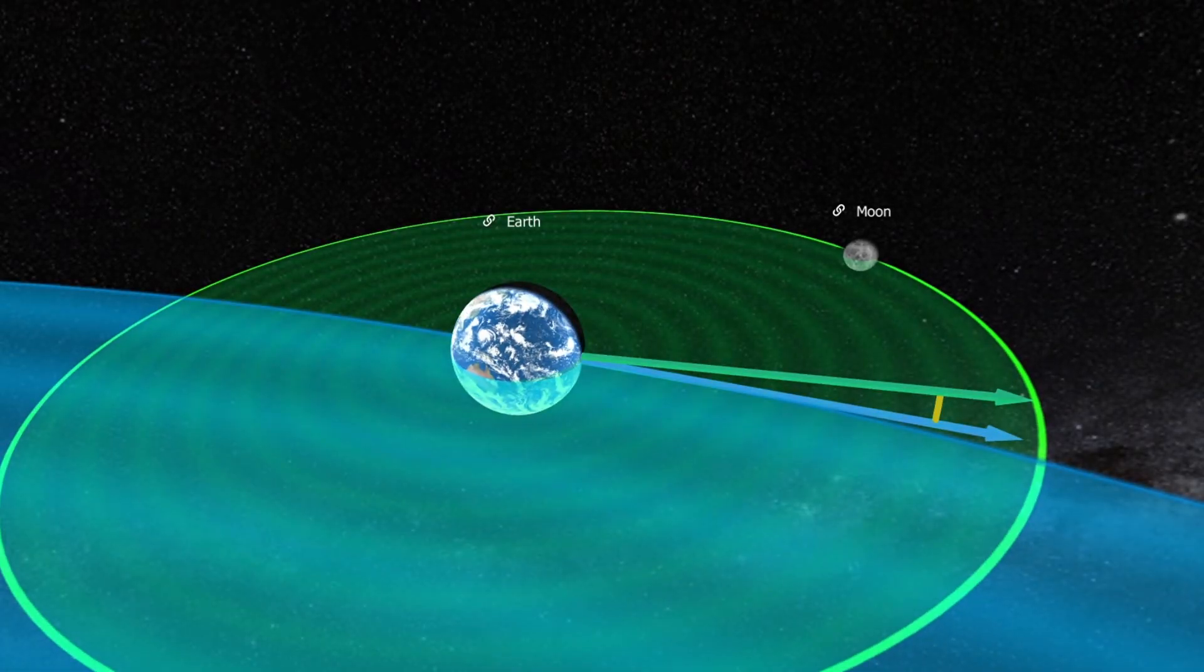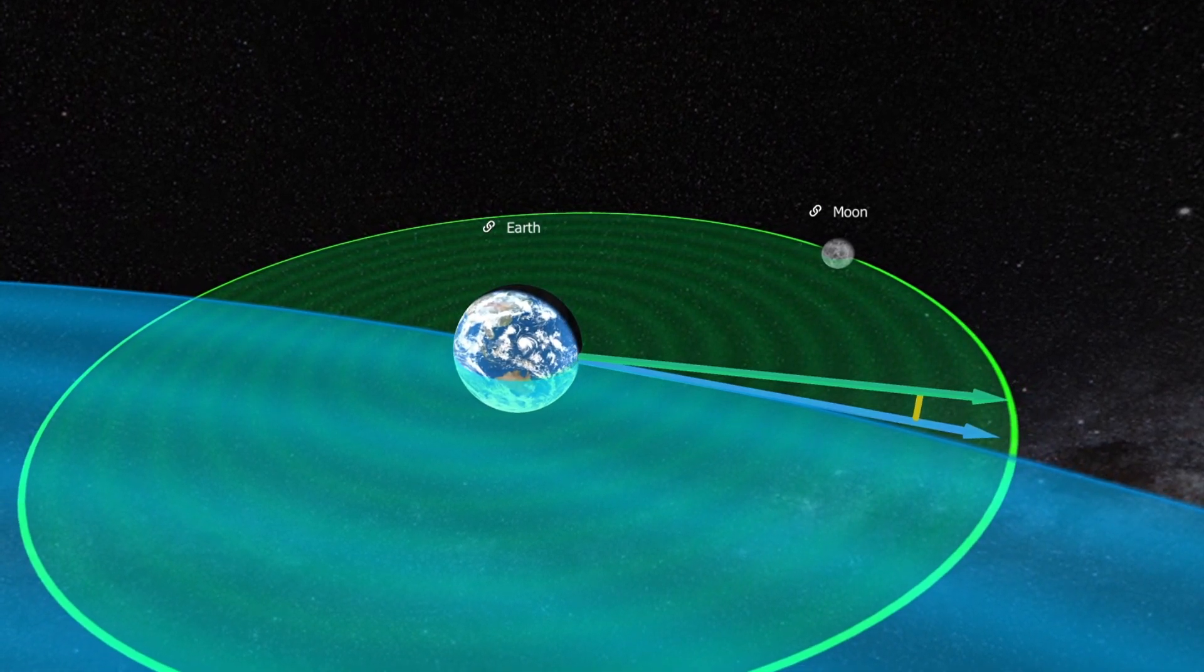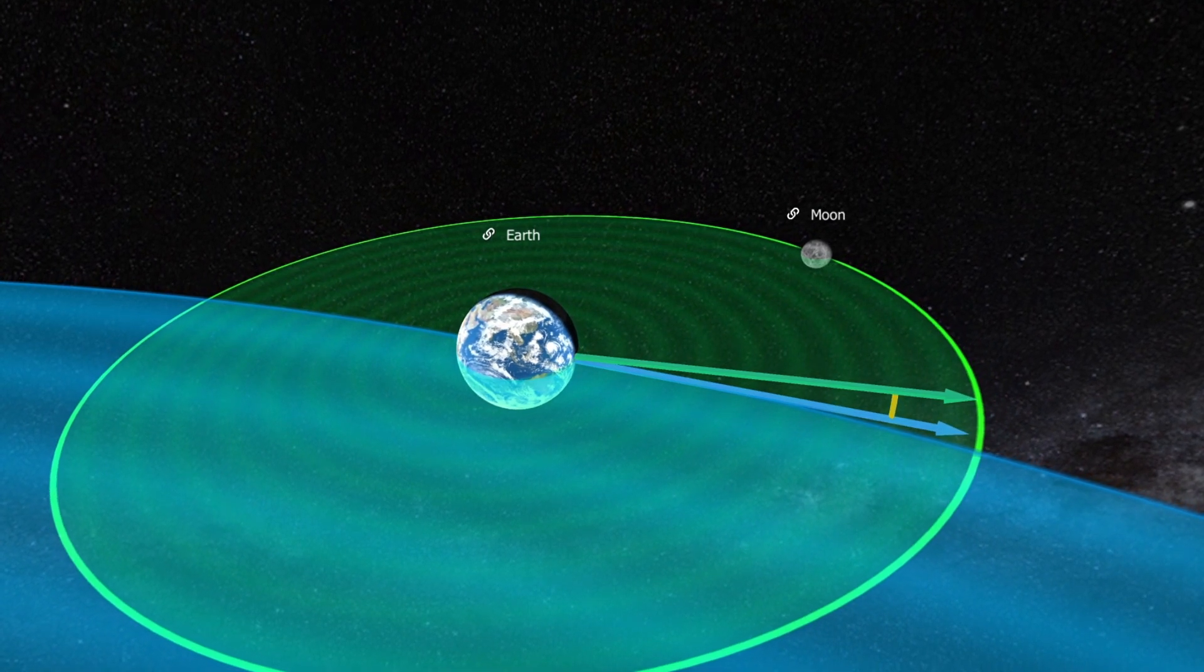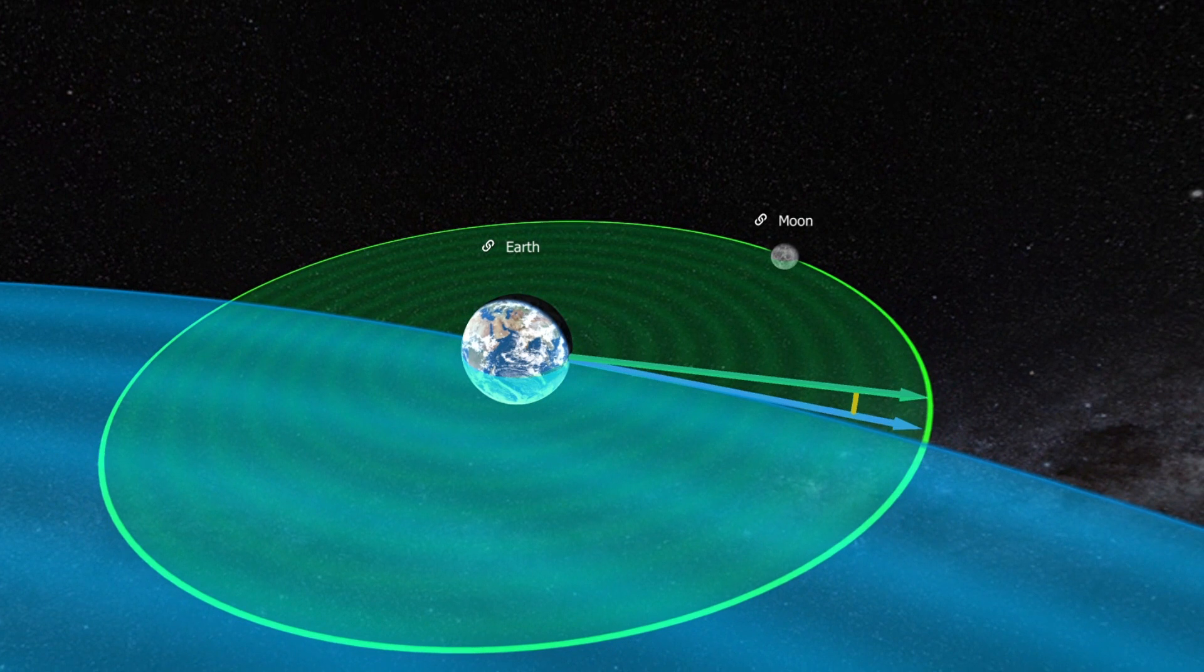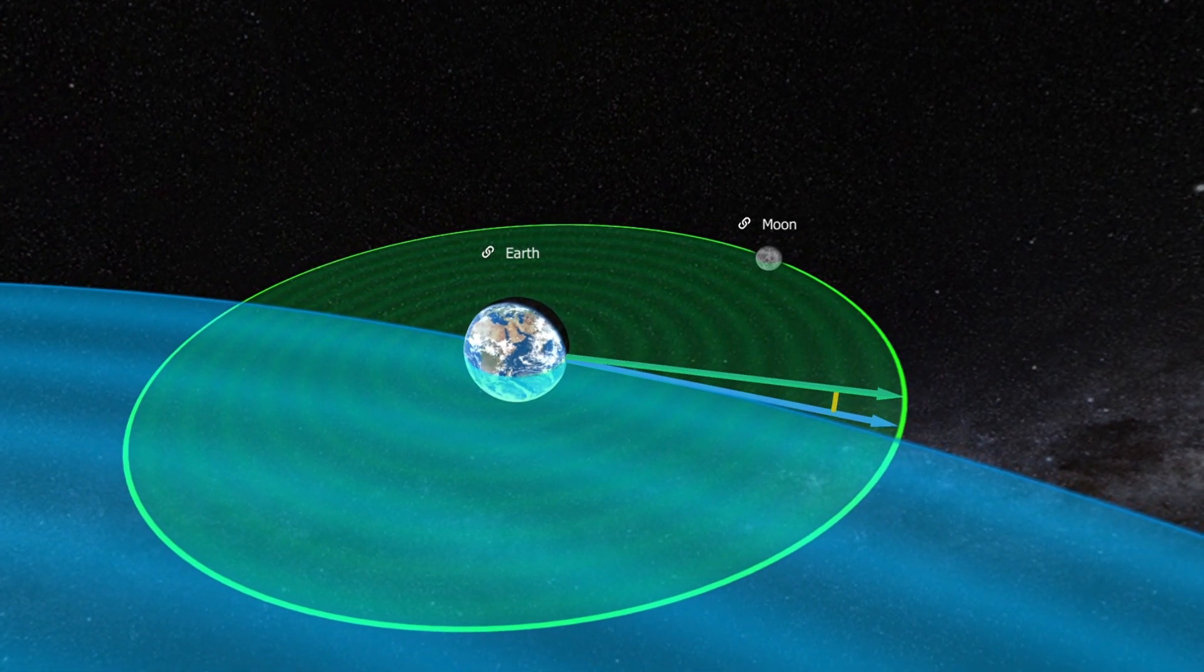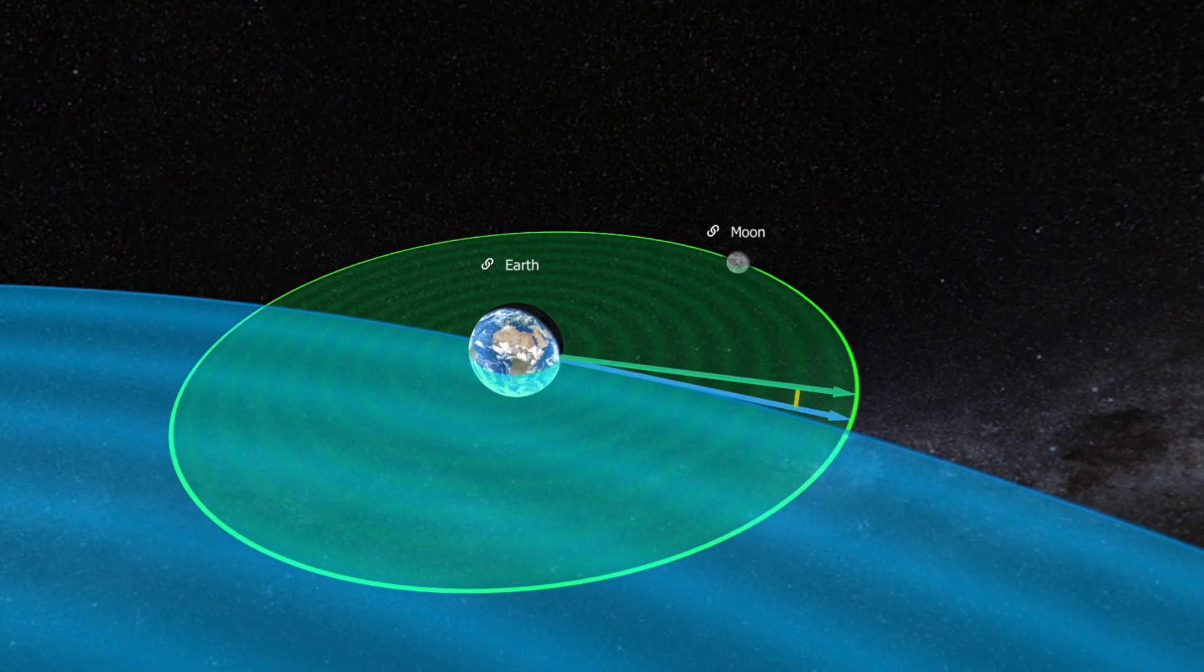A lunar eclipse occurs when the shadow of the Earth falls on the Moon. Two conditions must be met for a lunar eclipse. First, the Moon must be on the opposite side of the Earth from the Sun. That is, it must be in the full Moon phase. This is the only way it can be in the shadow cone.